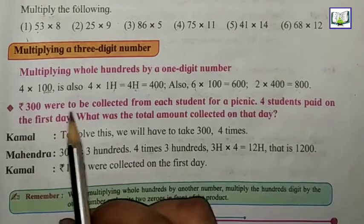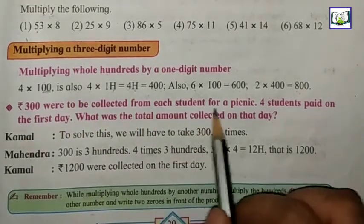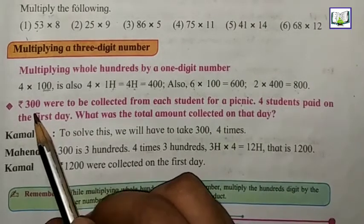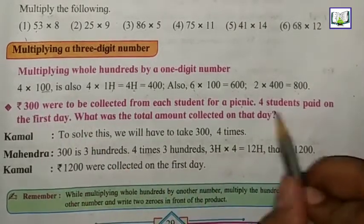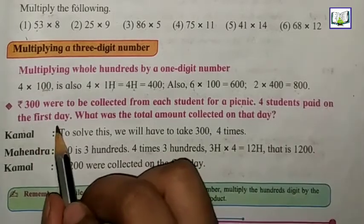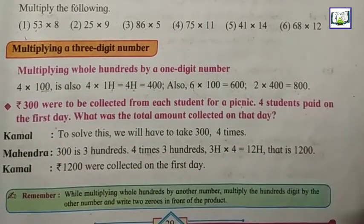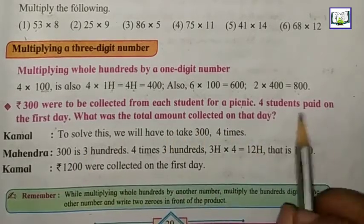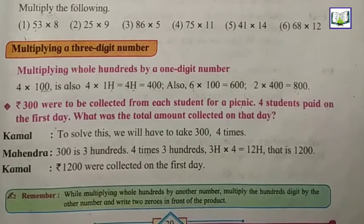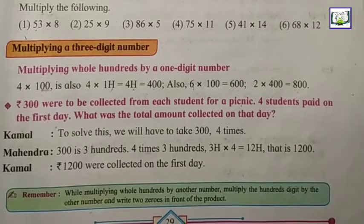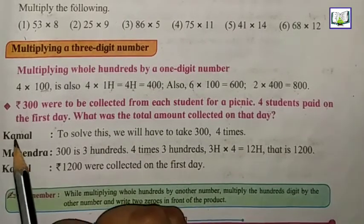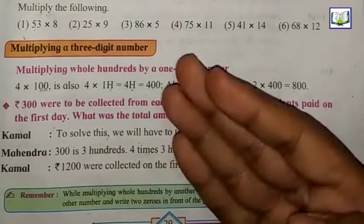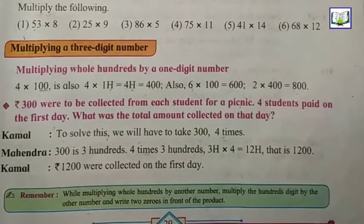Here is a question: If 300 were to be collected from each student for a picnic, and 4 students paid on the first day, what was the total amount collected on that day? To solve this, we will have to take 300 four times. Kamal said we can add 300 four times.